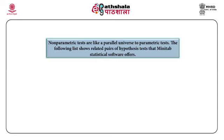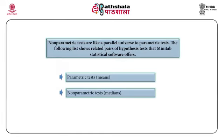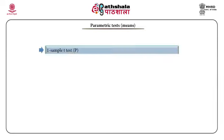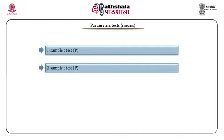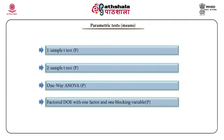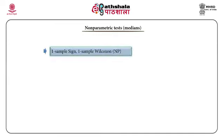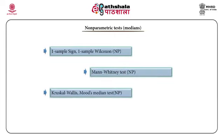The following list shows related pairs of hypothesis tests. Under parametric tests, we can have: one sample t-test, two sample t-test, one-way ANOVA or analysis of variance, and factorial DOE with one factor and one blocking variable. The corresponding non-parametric tests, which are median-based, include: one sample sign, one sample Wilcoxon, Mann-Whitney test, Kruskal-Wallis, Mood's median test, and finally the Friedman test.